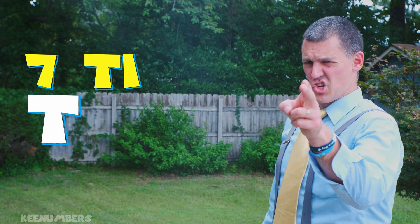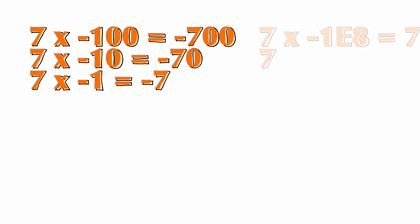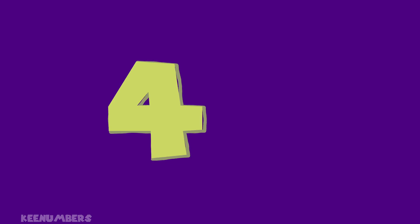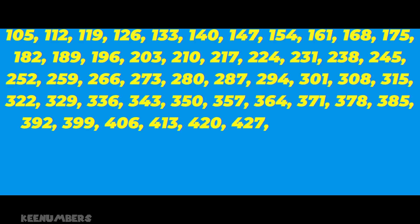Good thing we have the seven times table, which is just a fancy way of counting by seven: 7, 14, 21, 28, 35, 42, 49, 56, 63, 70, 77, 84, 91, 98, 105 — and so on and so forth.